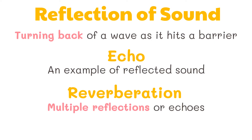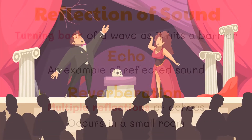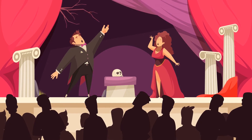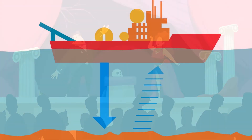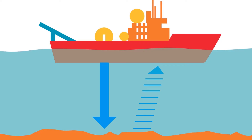A reverberation often occurs in a small room with height, width, and length dimensions approximately 17 meters or less. In theaters and movie houses, there are also reverberations and echoes, but these are not pleasing to the ears during a play or a movie. To lessen these, designers use thick curtains and cloth covers for the chairs and carpets. Echo sounding is another application of sound reflection, used by scientists to map the sea floor and to determine the depth of the ocean or sea.